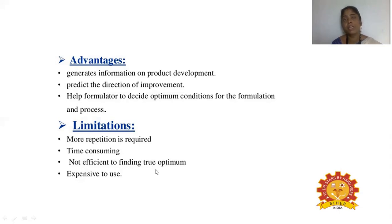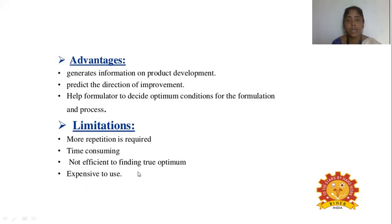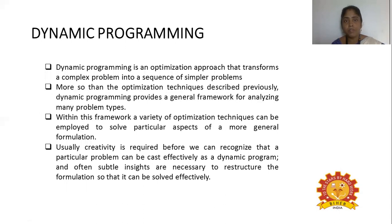In one trial, factor B may appear as the major factor in product formation; in another, factor A or D may act as the substrate for product formation. So we cannot predict the true optimum. That is why finding the true optimum is not efficient, and repeatedly doing it is time-consuming and expensive.